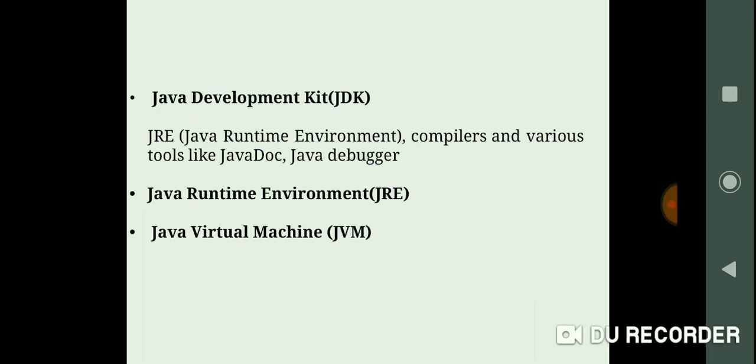Java Development Kit, that is JDK, includes Java Runtime Environment that is JRE, compilers and various tools like javadoc or Java debugger. It's a complete Java development kit that includes JRE, compilers, various tools. In order to create, compile and run Java program, you need to install JDK on your PC.